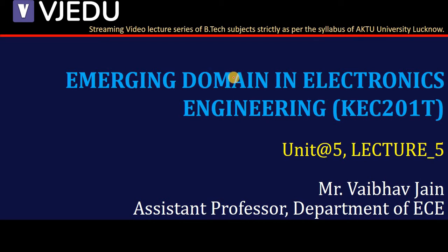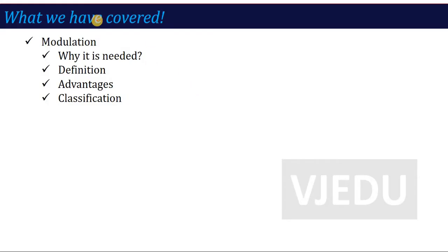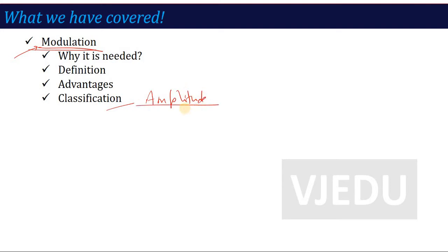Hello everyone, I welcome you all to the video lecture series of Emerging Domain in Electronics Engineering. The subject code is KEC201T and here we are in lecture number 5 of unit number 5. In the previous lecture we talked about the important topic called modulation — what is needed in our communication system, the advantages or need for modulation, and modulation classification, in which we discussed amplitude modulation.